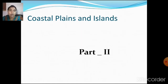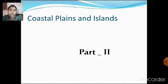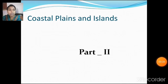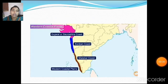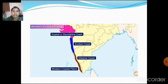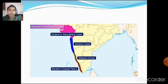In the first part we saw what are coastal plains and the two different types of coastal plains. They are the eastern coastal plain and the western coastal plain. In the western coastal plain we saw that it started from Gujarat and ends in Kanyakumari, the southernmost tip of the peninsula.